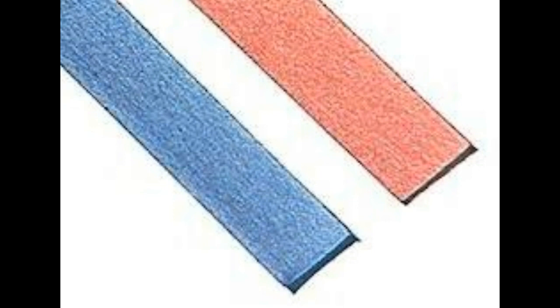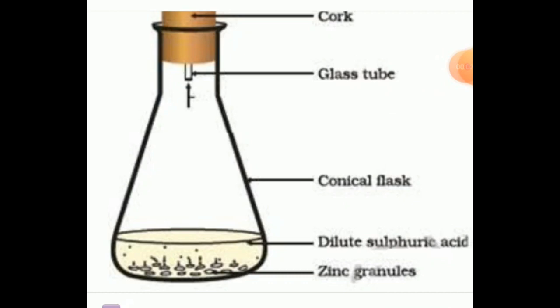Second activity: formation of hydrogen gas by the action of dilute sulfuric acid on zinc. For this experiment, take a conical flask or test tube, dilute sulfuric acid or hydrochloric acid, zinc granules, a glass tube, and a rubber cork. Take a few zinc granules in a conical flask or test tube and add dilute hydrochloric acid or sulfuric acid. Handle the acid with care.